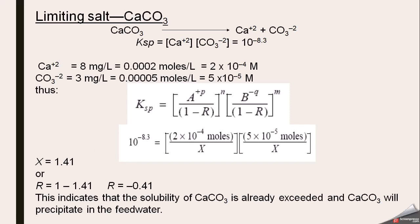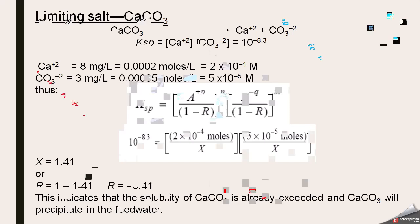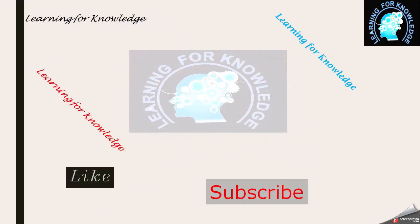The purpose of calculating the limiting salt is to find out whether scaling is occurring. This covers the basics of reverse osmosis scaling and how to calculate the limiting salt using the modified Ksp expression.